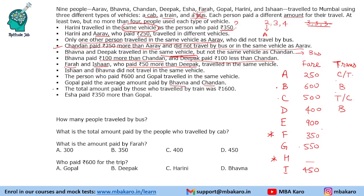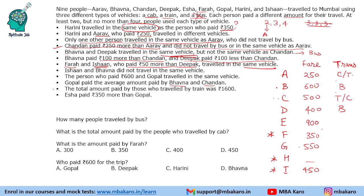Farah and Ishan travelled in the same vehicle. Since Farah and Harini are already in the same vehicle, Ishan is also in that vehicle. If they were in bus, that would make five people in bus, which is not allowed. So they are in cab or train. If we put them with Arav, that would make four people — not allowed either. So they must be in the same vehicle as Chandan.